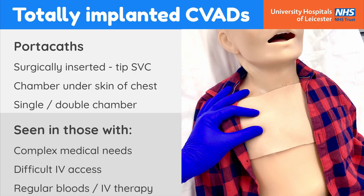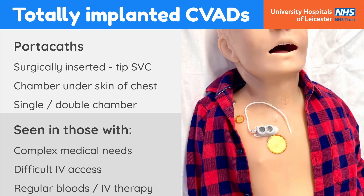Portagaths consist of a central venous catheter surgically inserted into the subclavian vein with its tip lying in the superior vena cava. A chamber at the end of this device is tunnelled to lie beneath the skin on the upper part of the chest. They can be single or double lumen, and are most commonly seen in children with complex medical needs who have difficult IV access requiring regular blood tests or repeated courses of IV antibiotics.